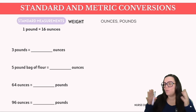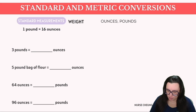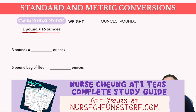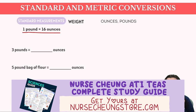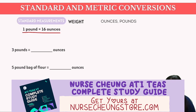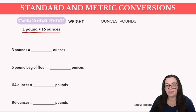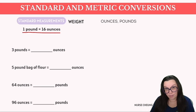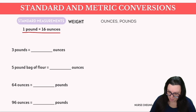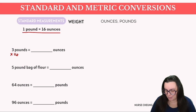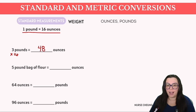Next up is weight in the standard system. The TEAS loves to test pounds to ounces: one pound is equal to 16 ounces. Our first example is three pounds to ounces. We're going from a larger unit to a smaller unit, so we multiply three pounds by 16, giving us 48 ounces.